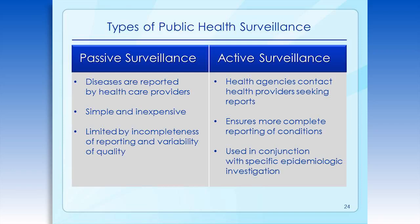Passive surveillance is the most common type. It is simple and inexpensive, but it's also limited by the variability of quality and completeness of reporting. Active surveillance systems involve regular outreach to potential reporters to stimulate the reporting of specific diseases or injuries. Active surveillance is oftentimes used to validate the representativeness of passive reporting. It can be used to ensure more complete reporting of conditions, or it can be used in conjunction with specific epidemiologic investigations. Active systems are often used for brief periods for discrete purposes, such as during outbreak investigations or for diseases of special interest such as SARS.